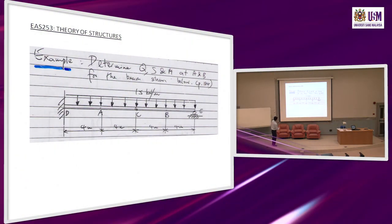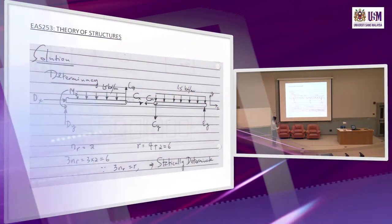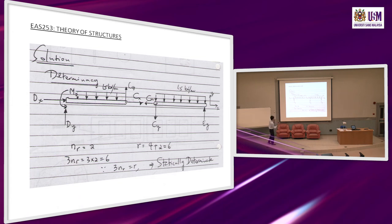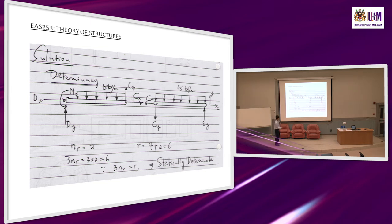Let's go through a simple example to illustrate the importance of using the correct sign convention. You are asked to find axial force, shear force, and bending moment at points A and B. First, check for statical determinacy: there is a hinge, so separate at the hinge. With 6 unknown forces and 2 parts each having 3 equilibrium equations (3×2=6), the structure is statically determined.